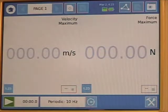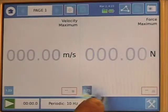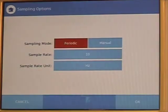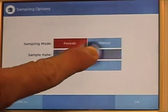To change the sampling rate, you press the icon at the bottom of the screen that looks like a clock, press sampling rate.